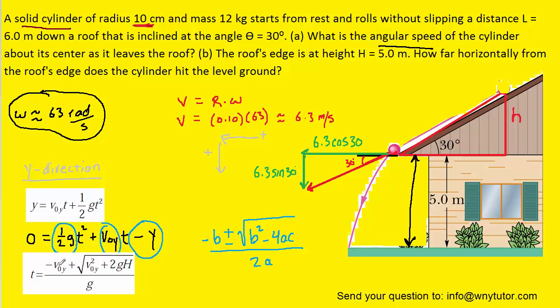So, after we plug in the initial velocity in the y direction, which, remember, was 6.3 sine of 30, so that's going to go in right for v 0 y, both there and here. g is 9.8, h was 5. We can plug in, and we obtain approximately 0.74 seconds. So that's how long it's going to take for the cylinder to roll off the roof and hit the ground.